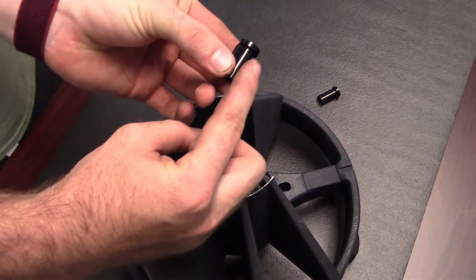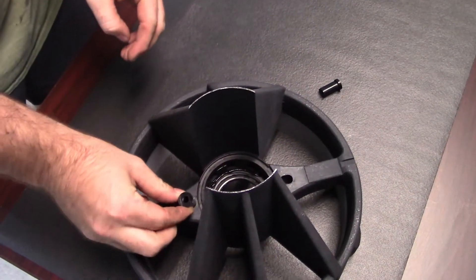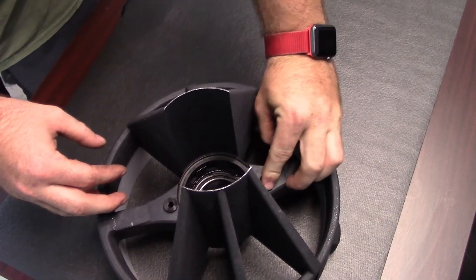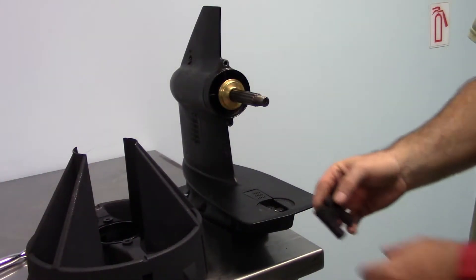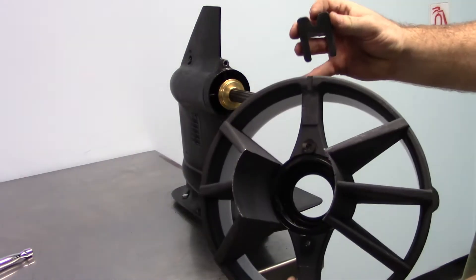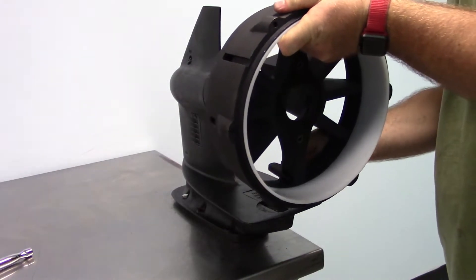Install the stator bolt inserts into the stator bolt holes with the offset portion facing inwards. Slide the V block over the upper exhaust arm of the stator and guide the stator into place over the propeller shaft.